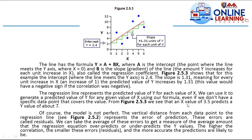At an x value of 3.5, projecting upward onto the regression line and then left predicts a y value of about 7.